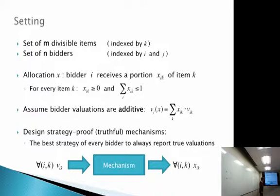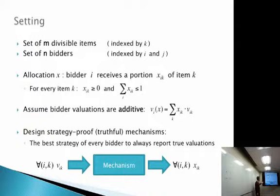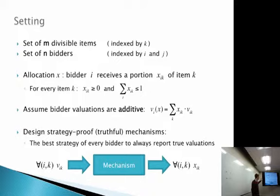Using this model, we want to design strategy-proof or truthful mechanisms where the best strategy of every bidder — no matter what the instance — is to always report true valuations. We design the mechanism so that truthful reporting is in each player's best interest. The mechanism receives the values v_{ik} for every i and k as input and outputs an allocation x_{ik}. We'll consider different objectives throughout the talk.